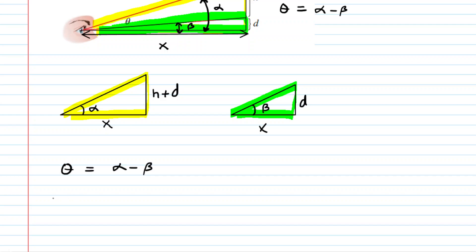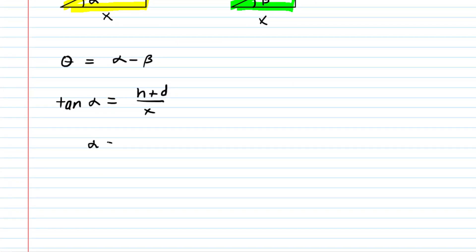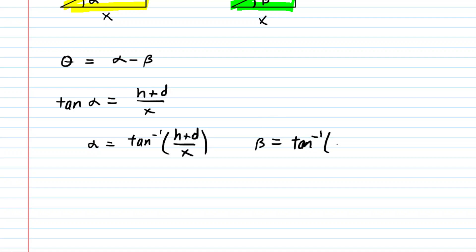Looking at the yellow triangle, we can find alpha. For the yellow triangle, the tangent of alpha would equal the opposite side divided by the adjacent side. To solve for alpha, you would take the inverse tangent: alpha equals the inverse tangent of (H plus D) over X. Similarly, for the green triangle, beta is equal to the inverse tangent of D over X.